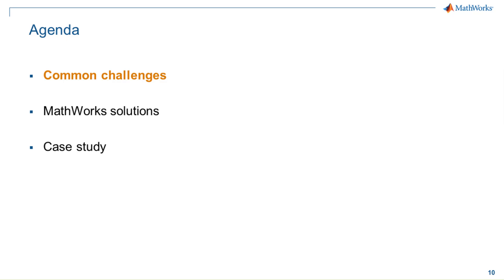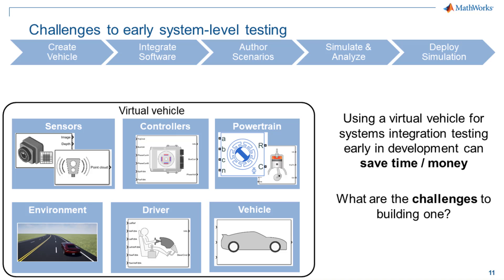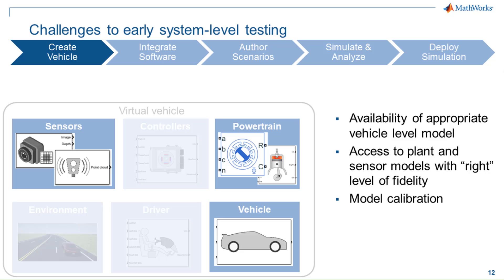Let's begin with some common challenges. Having a virtual vehicle early for integration testing can save time and money, but there are some challenges along the way. We've grouped these into categories. The first challenge is just getting the vehicle model ready so you can start testing. You may have a vehicle model from prior work, but it may not be appropriate for the kinds of analyses you're trying to run now. Do you have access to the right sensor models and plant models at the right fidelity? And can you integrate these pieces from different teams or tools?